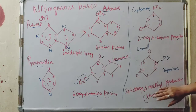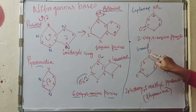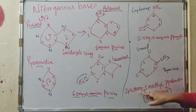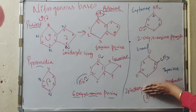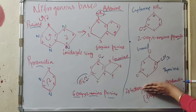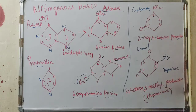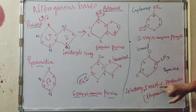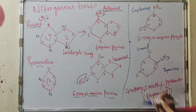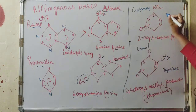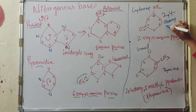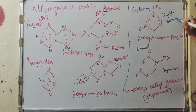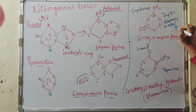For uracil: it is 2,4-dioxypyrimidine — both the second and fourth carbons have oxygen. For thymine: it is 2,4-dioxy-5-methylpyrimidine, because it is the same as uracil but with a methyl group added at the fifth carbon.